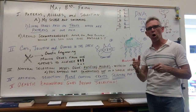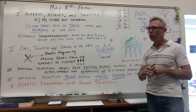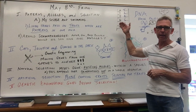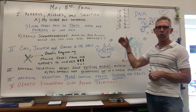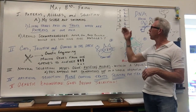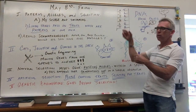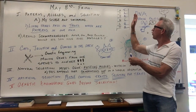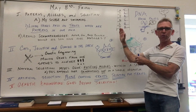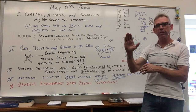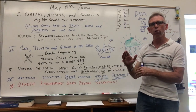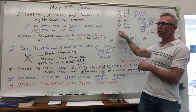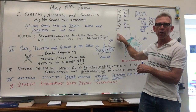Later on, when we talk about RNA, what happens with the DNA is there's another molecule that goes in, basically unzips the molecule, looks at half the pattern, and is able to tell exactly what protein to make based on this pattern.